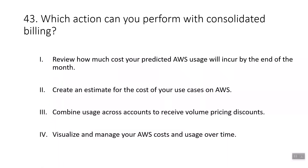Question forty-three: which action can you perform with consolidated billing? The answer is combining usage across accounts to receive volume pricing discounts. Reviewing predicted AWS usage costs by end of month is done by AWS Budgets. Creating an estimate for usage costs is done by AWS Pricing Calculator. Visualizing and managing AWS costs over time is done by AWS Cost Explorer.